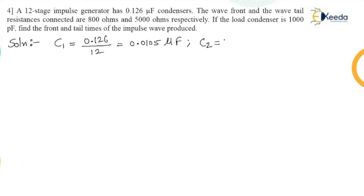Then the values of resistance, series resistance or wave front resistance 800 ohms and wave tail resistance that is 5000 ohms, that is shunt resistance or damping resistance. With this information we have to find out the front and tail time.